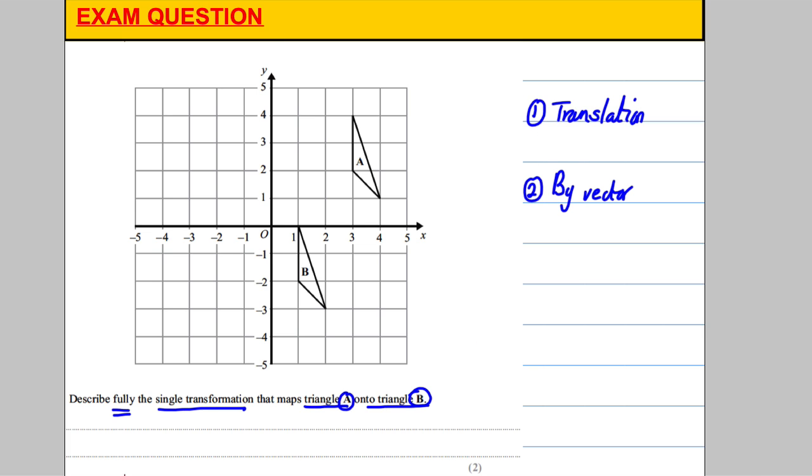Let me point out a classic mistake. Students might not read carefully and go from B to A, saying it's by vector 2, 4: two across and four up. But it's from A to B. The examiner has purposefully placed A to almost trick you into going from B to A, but it's from A to B.